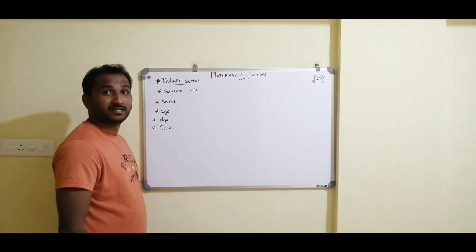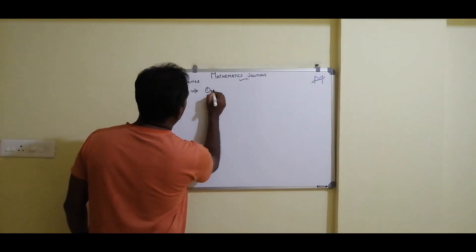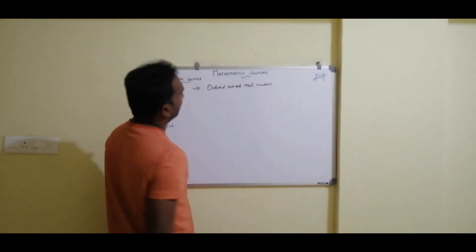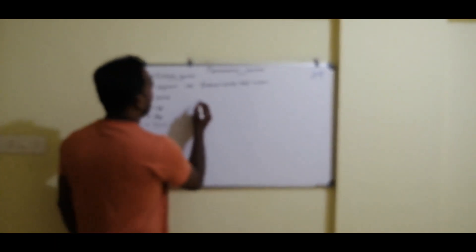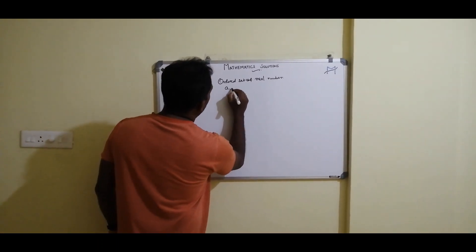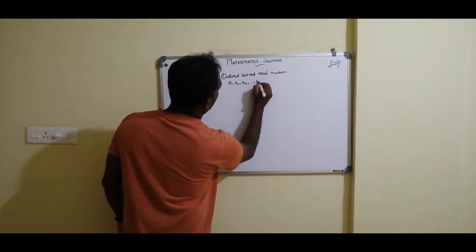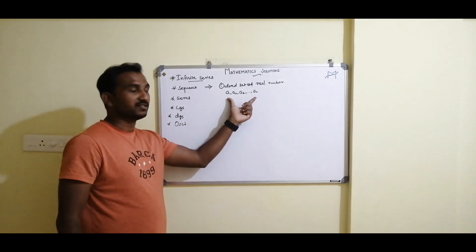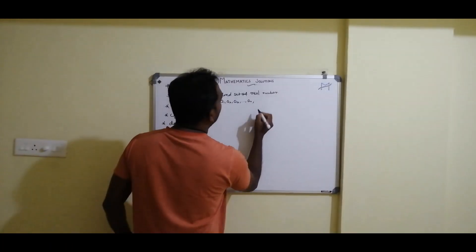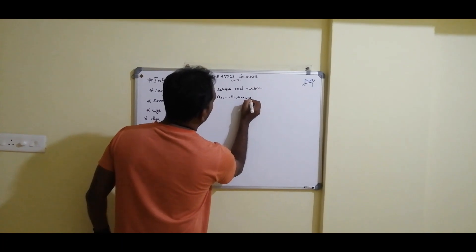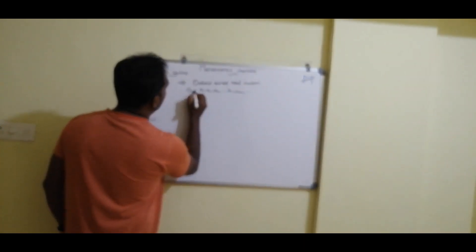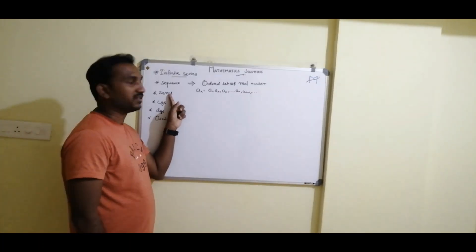What does sequence mean? The ordered set of real numbers is called a sequence. We can express it as a1, a2, a3 up to an. If we consider only n terms, that is called a finite sequence. If the terms are unlimited, we call it an infinite sequence, denoted as {an}.